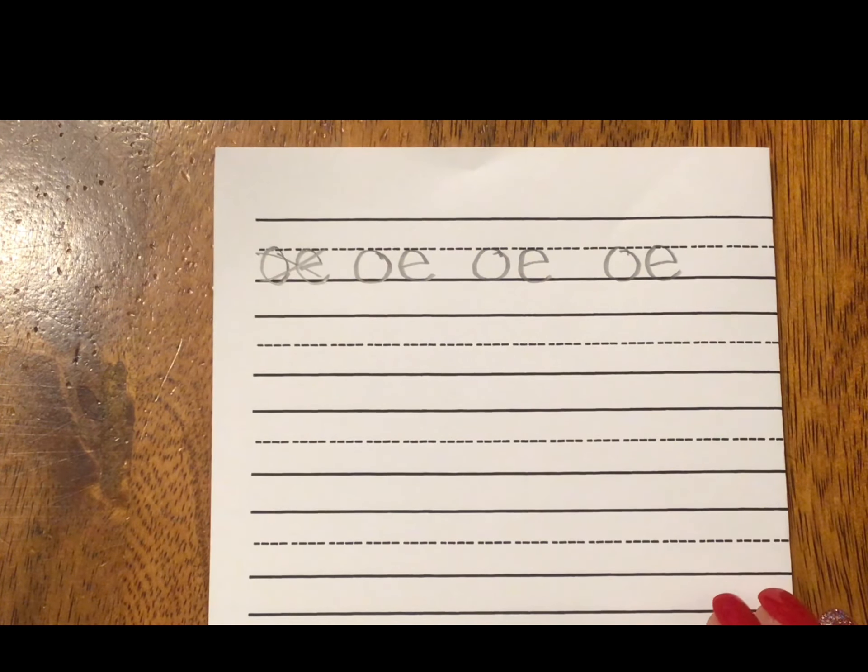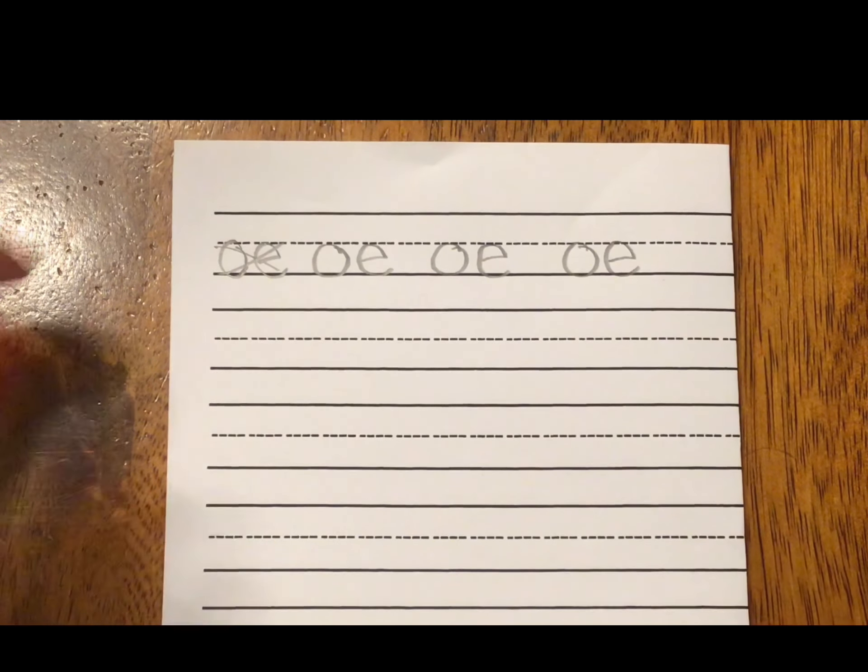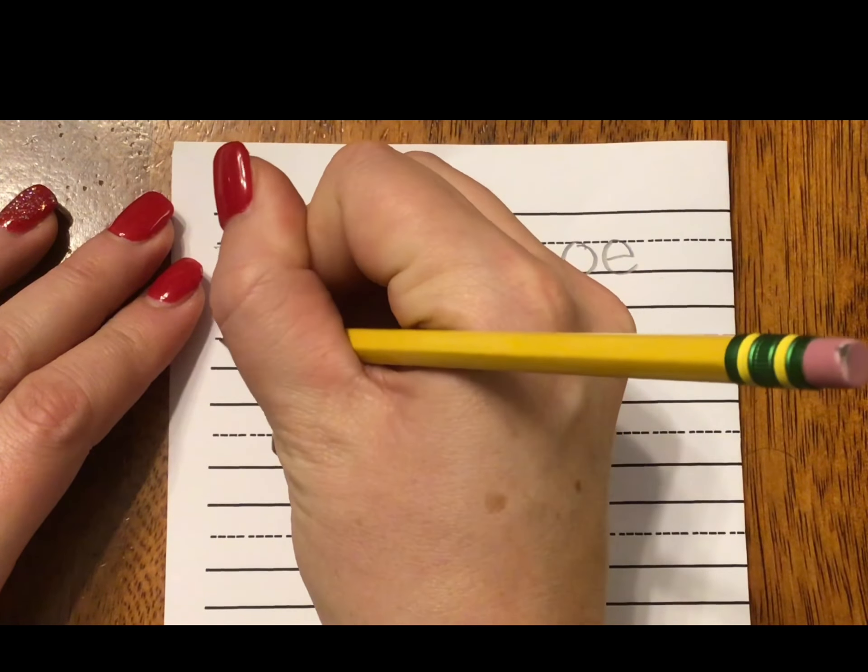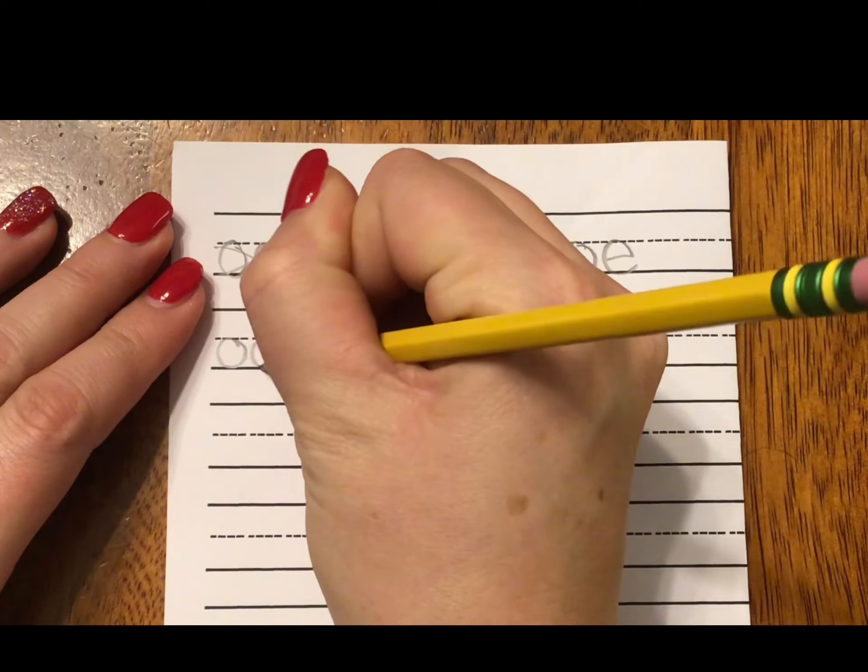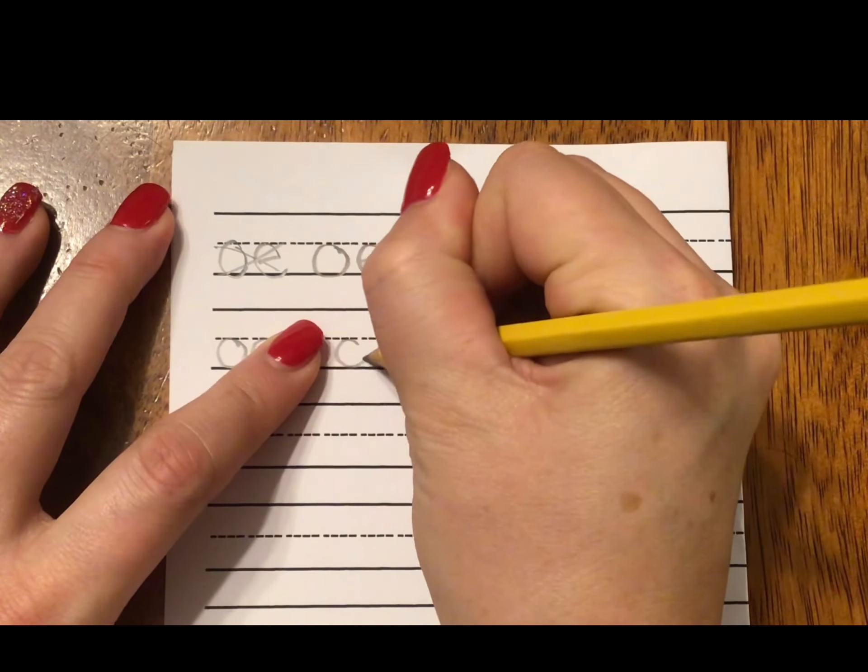Our next sound is O. Go ahead and say it. O. Go ahead and write it. And this is the O that's used in the word boat. Write the O that's used in the word boat. That is my O-A. Making sure I start at 2 o'clock. Around the clock, back up to 2.